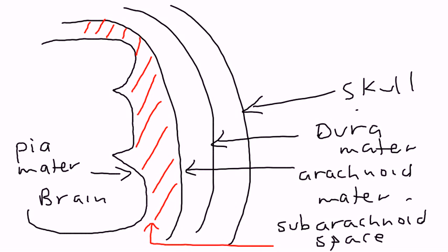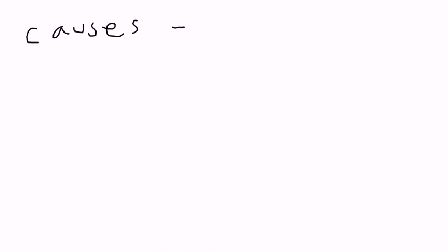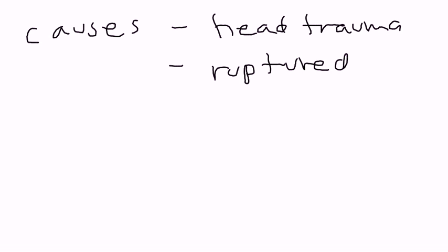And what are the causes? Why does this happen? There's a couple of reasons. The first is head trauma. A person with head trauma definitely can develop a subarachnoid hemorrhage. But another really common is ruptured aneurysms. Ruptured aneurysms can account for up to 85% of the cases.